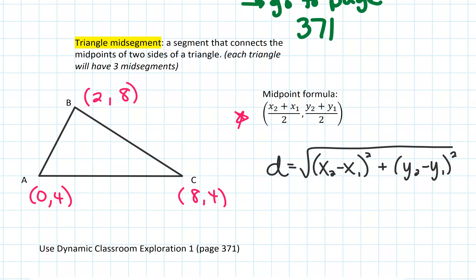To find the midpoint of AB, we average the x-values: (0 + 2) / 2, and we average the y-values: (4 + 8) / 2. So 2 / 2 = 1, and 12 / 2 = 6. The midpoint for AB is (1, 6), so we would label that point — let's call it M — at (1, 6).